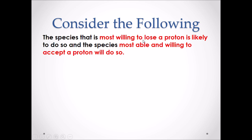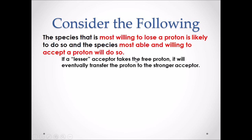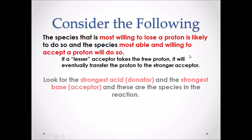Consider the following. The species that is most willing to lose a proton is likely to do so — that would be your strongest acid. And the species that is most able and willing to accept a proton will do so — that would be your strongest base. If a lesser acceptor takes the free proton first, it will eventually transfer the proton to the stronger acceptor over time. We need to look for the strongest acid, which would be our donor, and the strongest base, which will be our acceptor. These will be the species in the reaction.